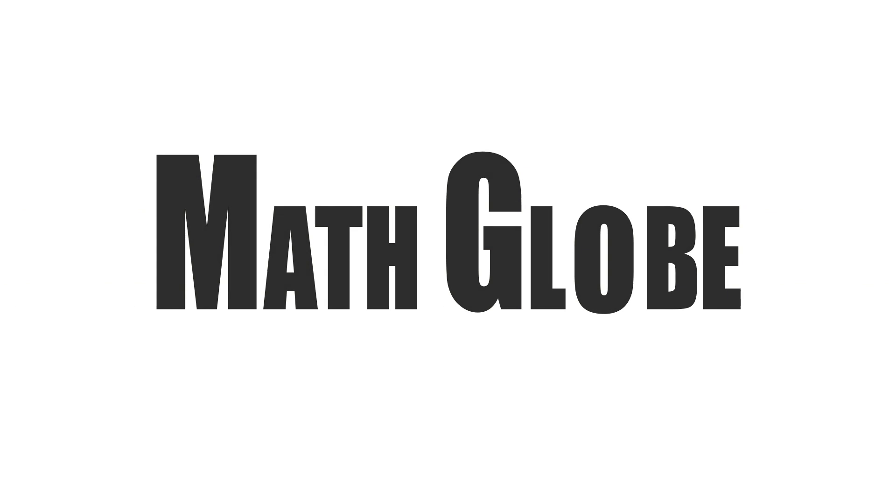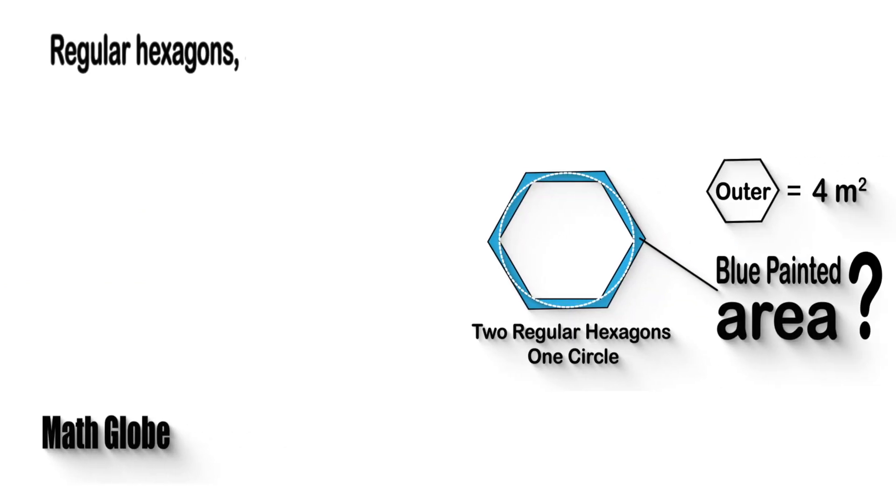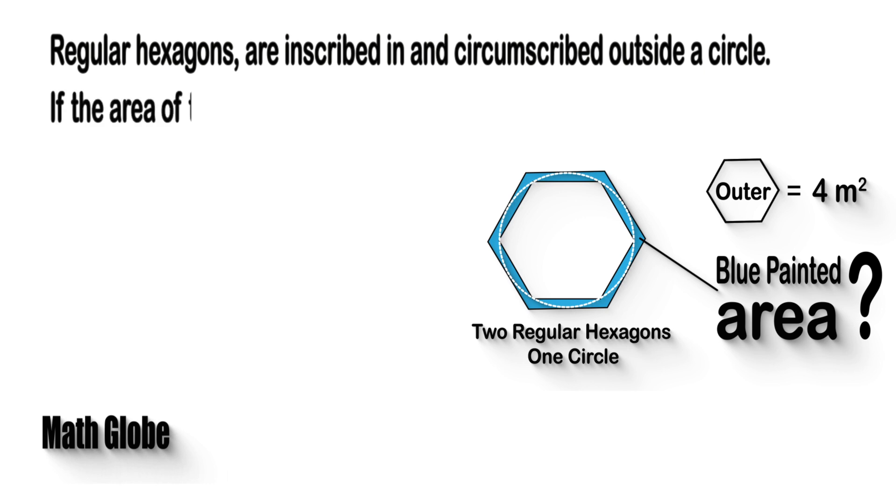Hi, this is MathGlobe. Regular hexagons are inscribed in and circumscribed outside a circle. If the area of the larger hexagon is 4, what is the blue painted area?